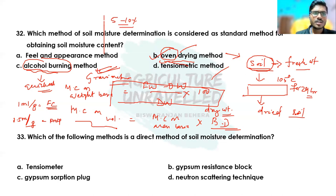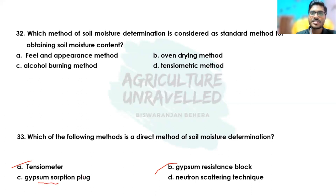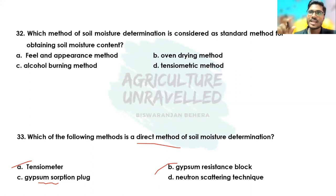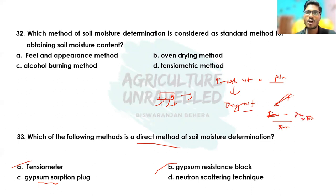Coming to the next question: which of the following methods is a direct method of soil moisture determination? The options are tensiometer, gypsum resistance plug, gypsum sorption plug, or neutron scattering technique. The correct answer is gypsum sorption plug. Direct methods estimate soil moisture directly using the gravimetric method. The gypsum plug is installed in soil, absorbs water, and its fresh weight is measured. Then the gypsum plug is dried and dry weight is taken. Using the formula — fresh weight minus dry weight divided by dry weight into 100 — soil moisture content is determined.